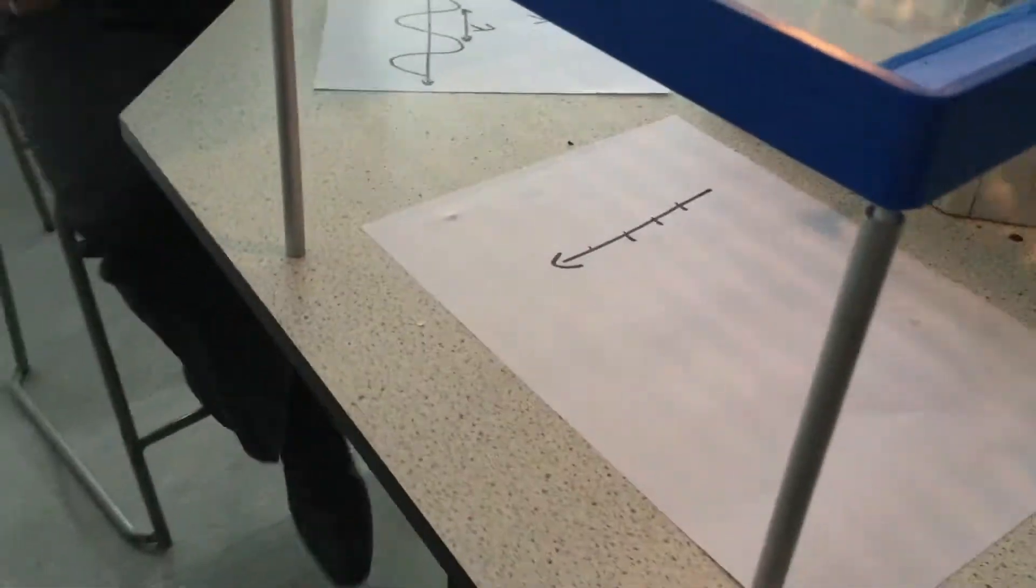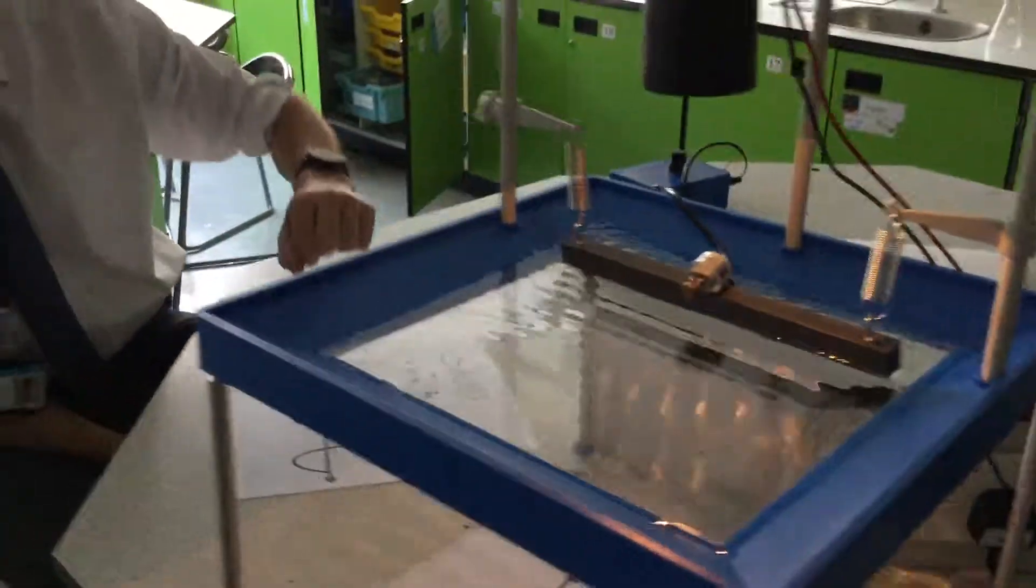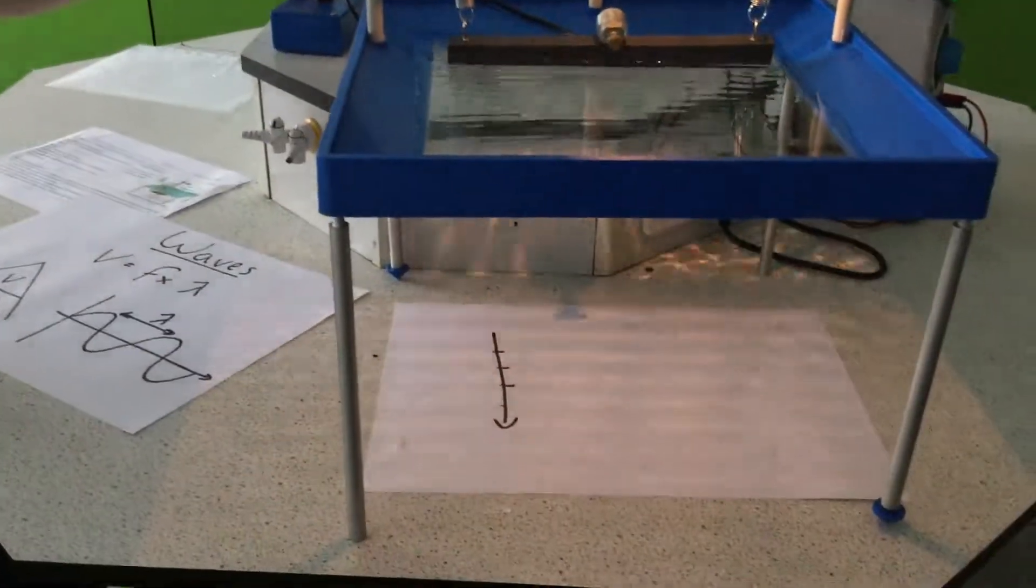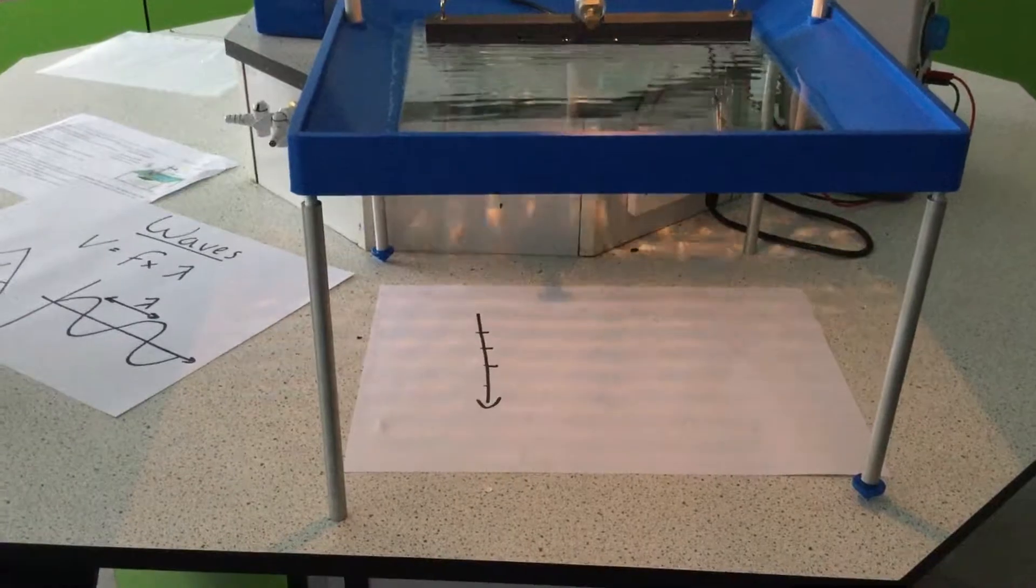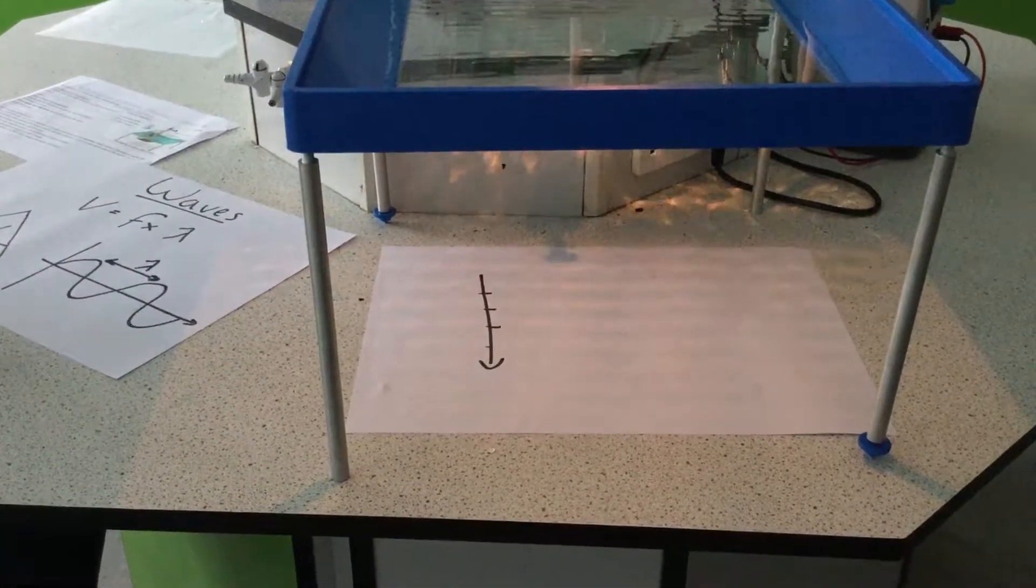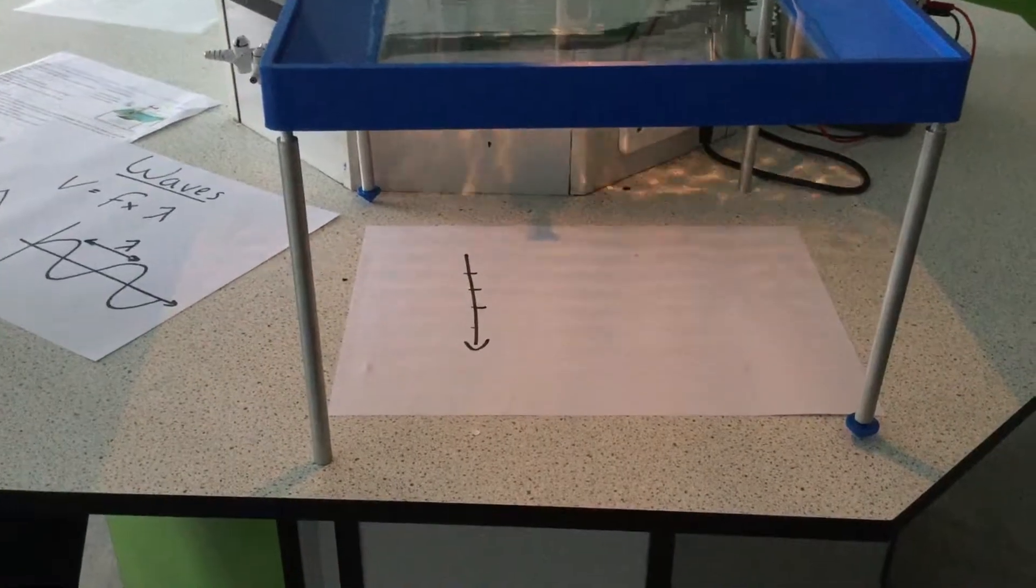So now what I'm going to try and do is I'm going to try and increase the speed at which the motor spins. The vibration is going to be faster and as I do that we should see that if I increase the frequency, the waves get closer together, makes them a little bit more difficult to see.